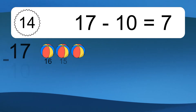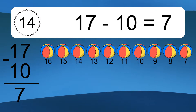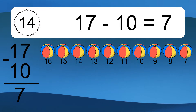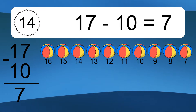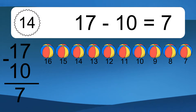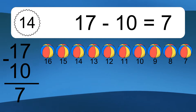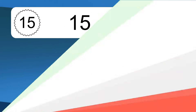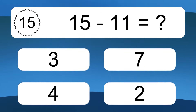17 minus 10 equals 7. Let's count it: 16, 15, 14, 13, 12, 11, 10, 9, 8, 7. 15 minus 11 equals what?